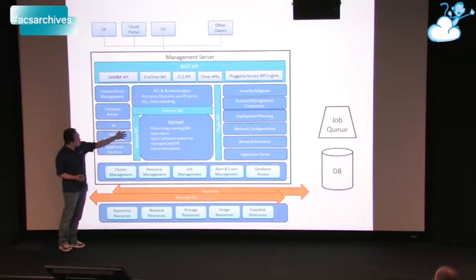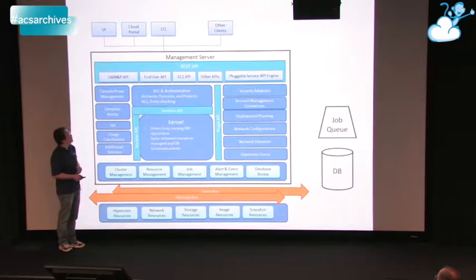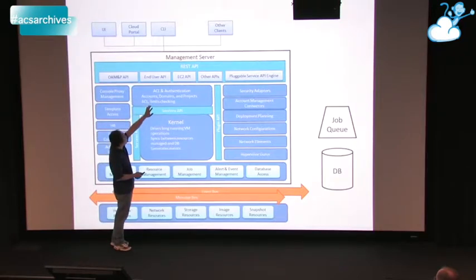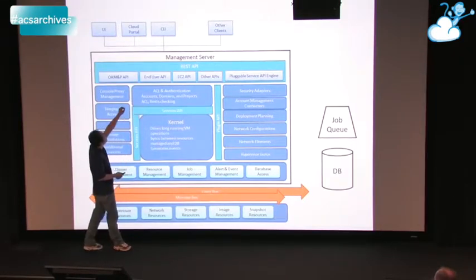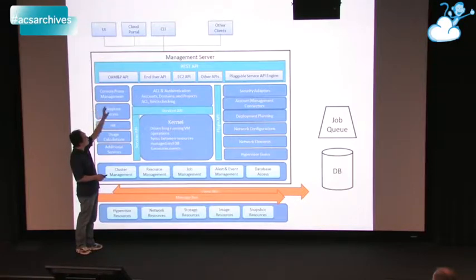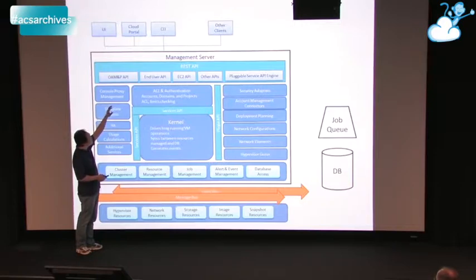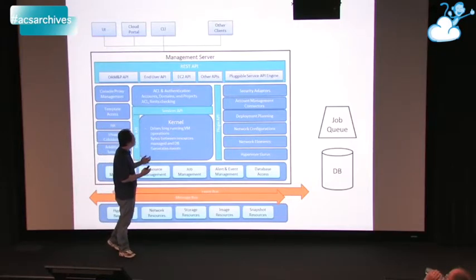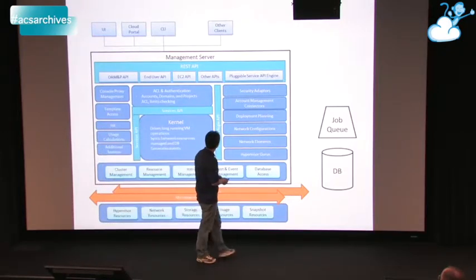Above here is still basically our REST API. We have architectures such that you can add in different types of API or different compliances to other API structures above and still map it down to CloudStack. And here would be our ACL and checks before someone is able to use it.